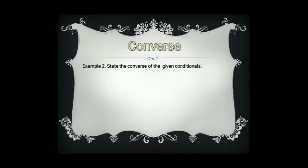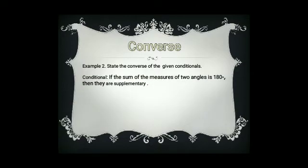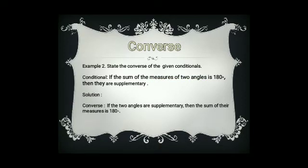Next, state the converse of the given conditionals. Recall that the converse is formed by reversing the hypothesis and conclusion parts. Given the conditional: if the sum of the measures of two angles is 180 degrees, then they are supplementary — we reverse the two parts. The converse is: if the two angles are supplementary, then the sum of their measures is 180 degrees.